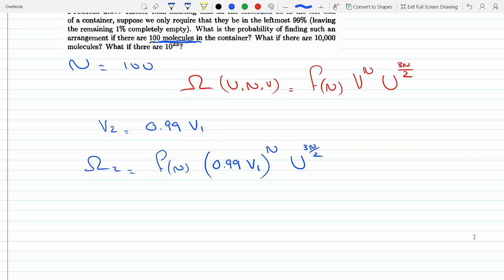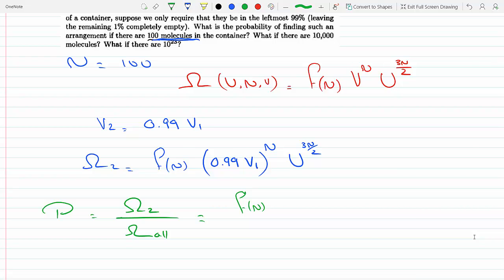So the probability will just be this over the multiplicity all. 'All' means if the molecules would have spread 100% of V1, so this would be V1 to the N, and the rest of the terms cancel because they are volume independent.